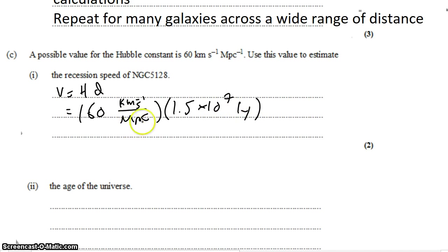You'll notice some unit mismatch. We have kilometers, megaparsecs, and light years. So let's see if we can turn these light years into megaparsecs and get them to cancel out. So let's take 1.5 times 10 to the 7 and divide it by 3.26 light years per parsec to turn it into parsecs. And then multiply by 10 to the negative 6 to turn the parsecs into megaparsecs. So all of that is megaparsecs, which cancel with these megaparsecs, leaving 276 kilometers per second.